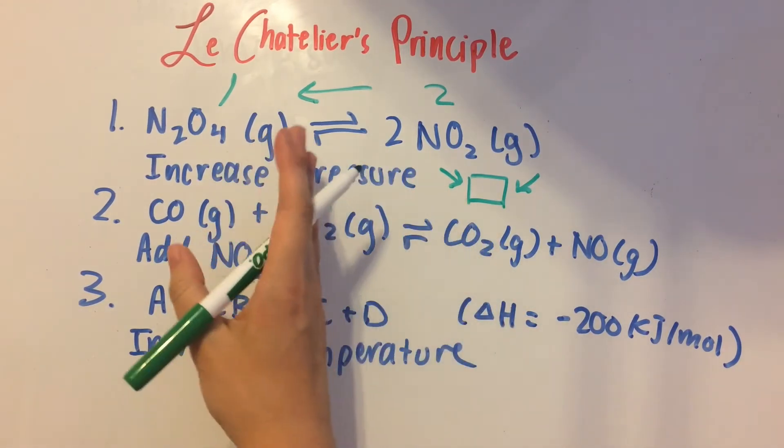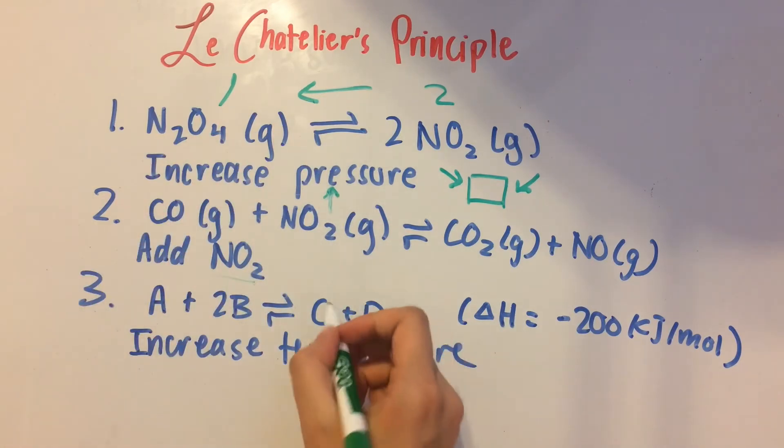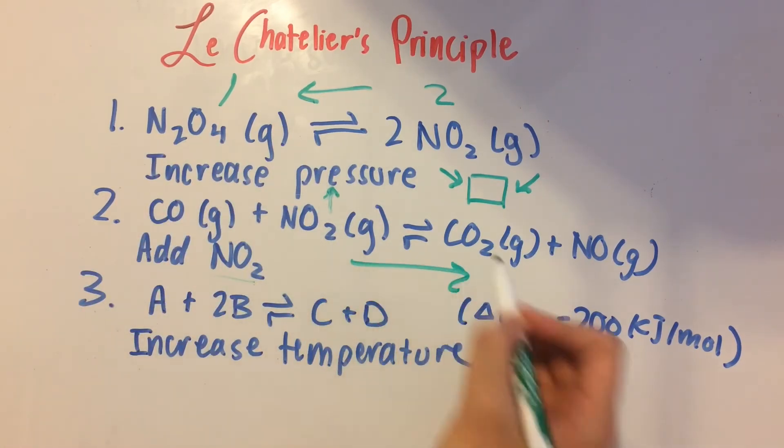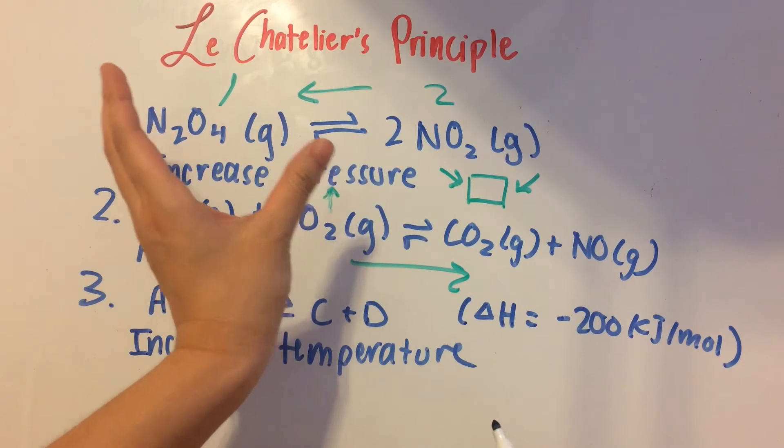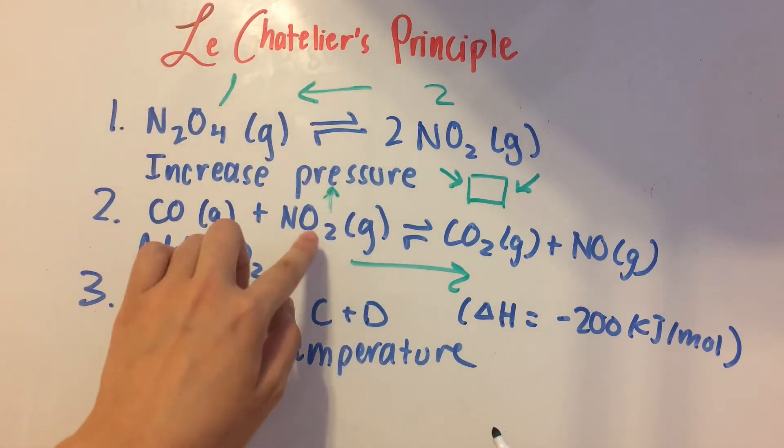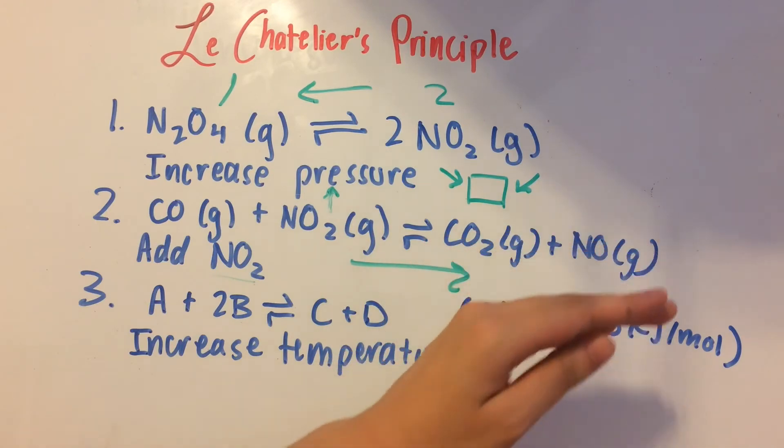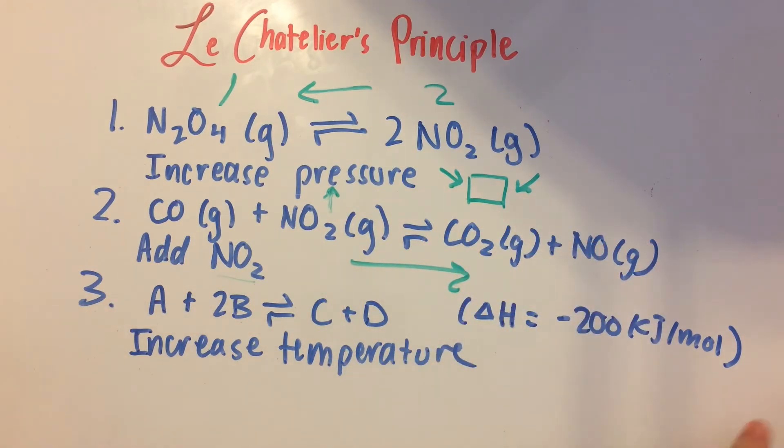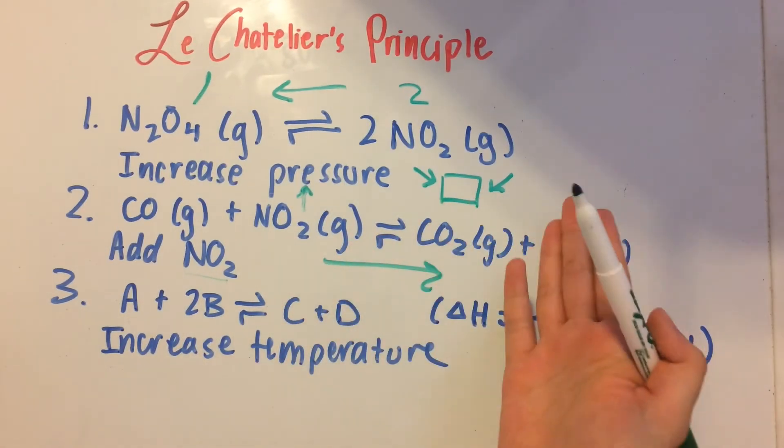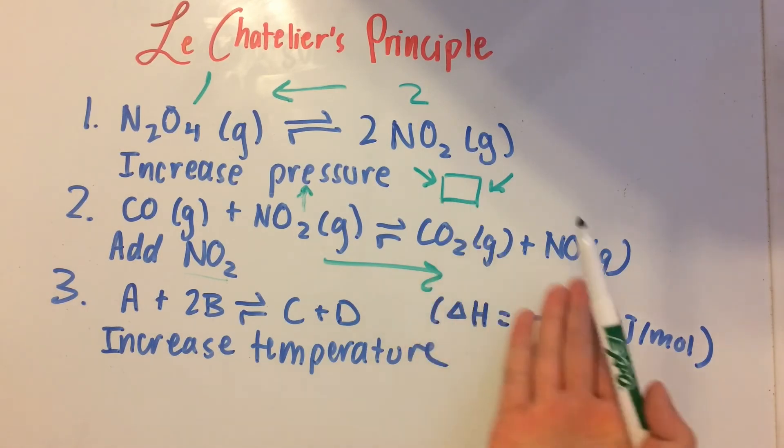And that, since it's on the left side of the equation, that's going to shift it to the right, because now we have too many reactants. The concentration of NO2 is too high. So it's going to shift over and make some more products to balance that disturbance out. So it's going to favor the right side of the equation and favor the products.